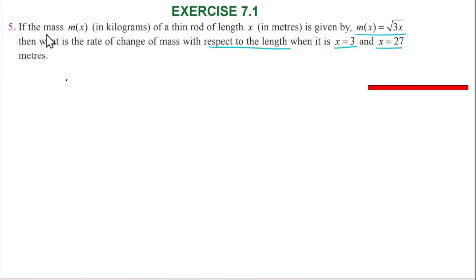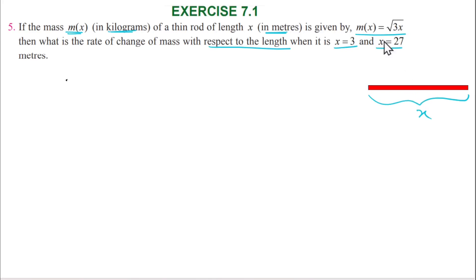Mass of the rod is equal to m of x, because mass is in kilograms and length is in meters. So the length of the rod is equal to x, and mass is equal to root of 3x. If the length increases or decreases, the mass increases or decreases.